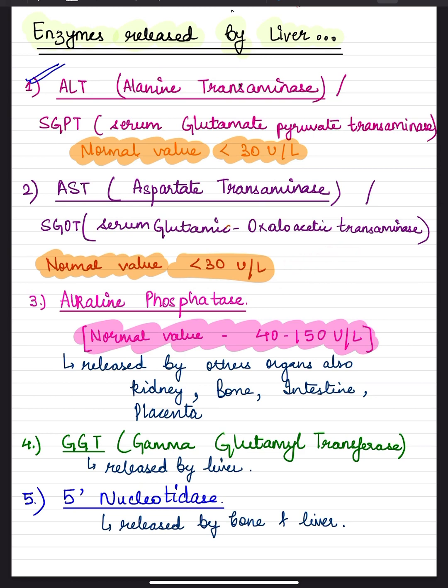Third one is alkaline phosphatase. Normal value ranges between 40 to 150 units per liter. This is also not liver specific as it is released by the kidney, bone, intestine, and placenta also.